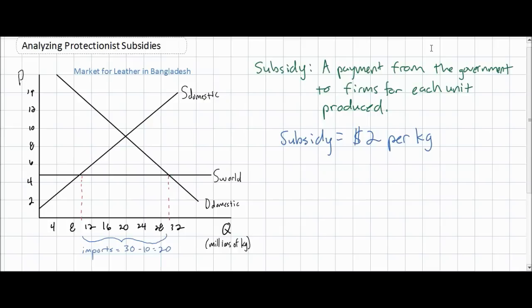A subsidy is a determinant of supply, so this $2 per kilogram subsidy for Bangladeshi leather producers should increase the domestic supply of leather in Bangladesh, which will be seen as an outward shift of the domestic supply curve. Let's see the effect that this has on price, on consumers, on domestic producers, on foreign producers, and on total welfare in the market for leather in Bangladesh.